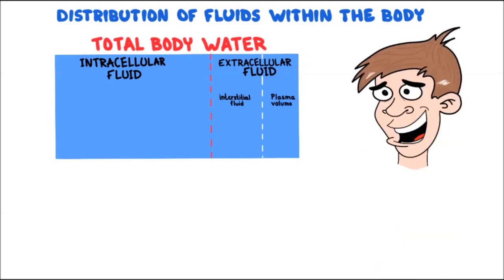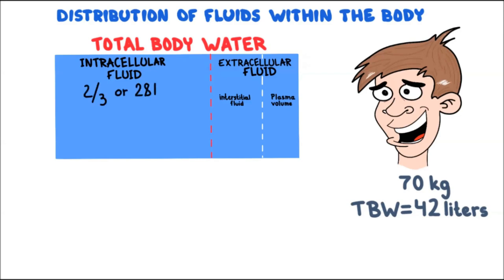In a 70 kilogram person, the total body water equals 42 liters. Approximately two-thirds, or 28 liters, of total body water is intracellular fluid. One-third, or 14 liters, is extracellular fluid. Interstitial fluid is about three-fourths of the extracellular fluid, which equals 10.5 liters, and plasma volume is approximately one-fourth, equal to 3.5 liters.